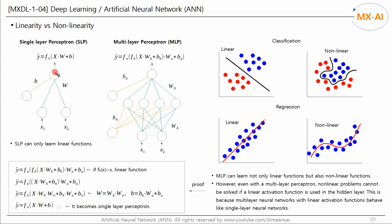Let's look at a single-layered neural network and a multi-layered neural network. A single-layer perceptron is a neural network consisting of only an input layer and an output layer — there are no hidden layers. It can only learn linear functions. For classification, only linear separation is possible, and in the case of regression, only linear regression is possible.